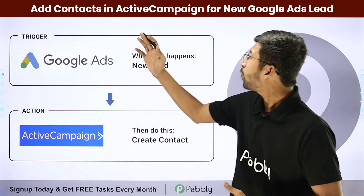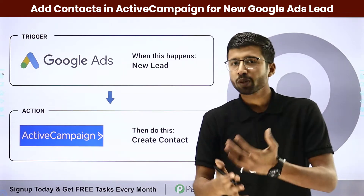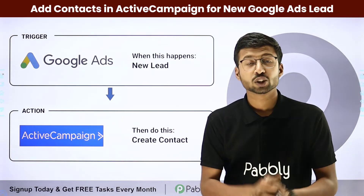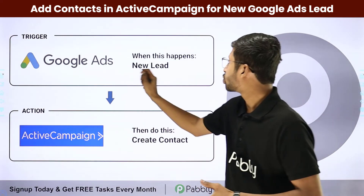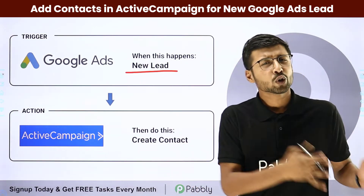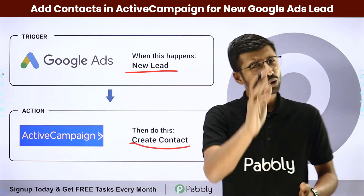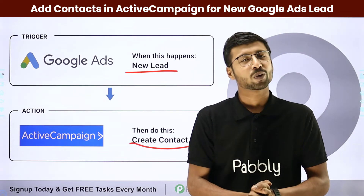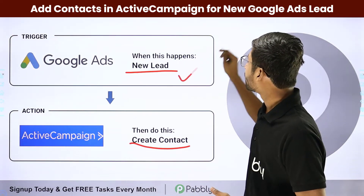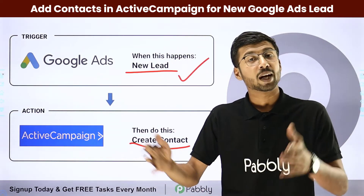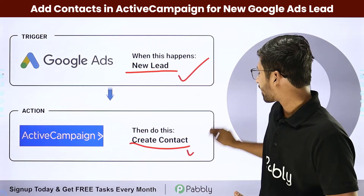In this video, we will learn how to add contacts in ActiveCampaign for new Google Ad leads. Suppose you are running some Google Ad campaigns to market your business, and you want all the new leads which you generate from your Google Ads campaign to be added as new contacts in ActiveCampaign. You can completely automate this process. The trigger will be getting a new lead in your Google Ads account, and the action will be adding those leads as a new contact in ActiveCampaign.